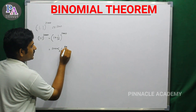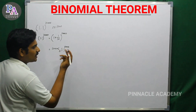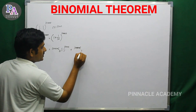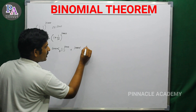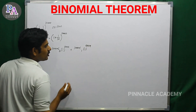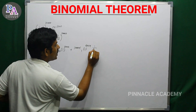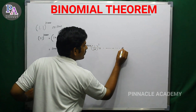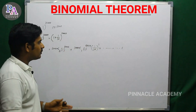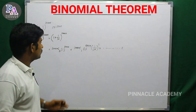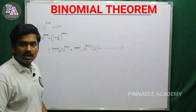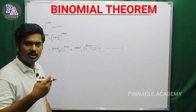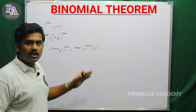Expanding using the binomial theorem: 10,000 C0, first time power is 10,000 and second time power is 0. Plus 10,000 C1, first time power is 9,999, second time power is 1. Plus etc. The number of terms is 10,000.